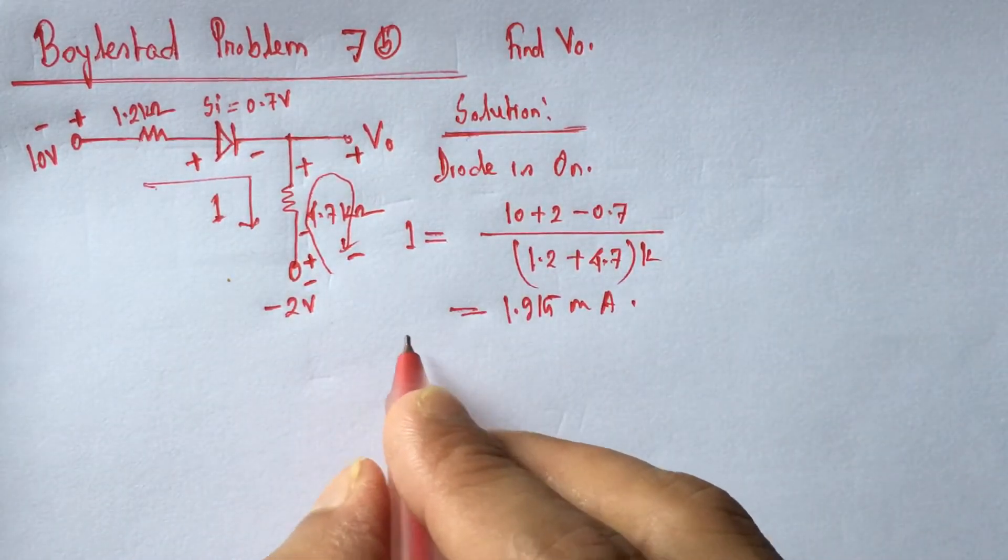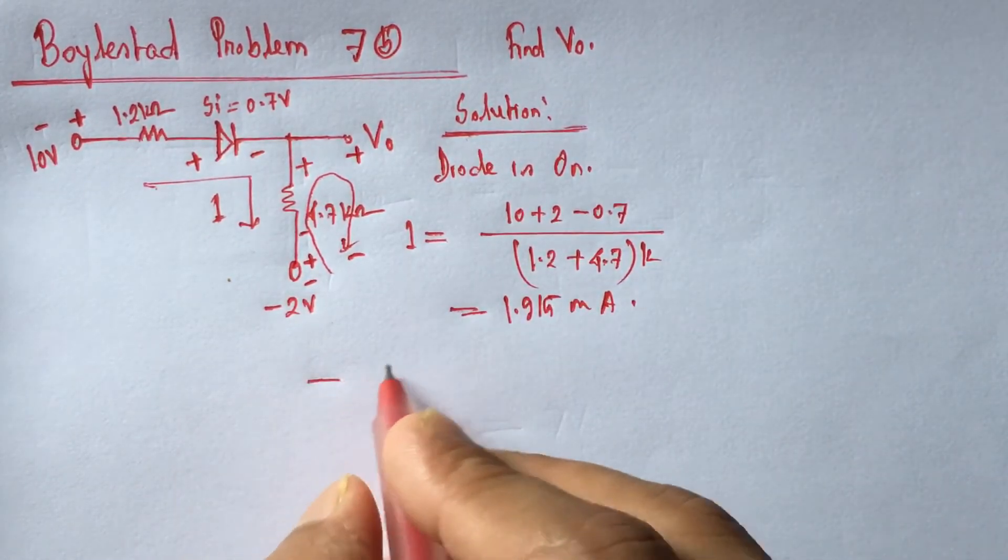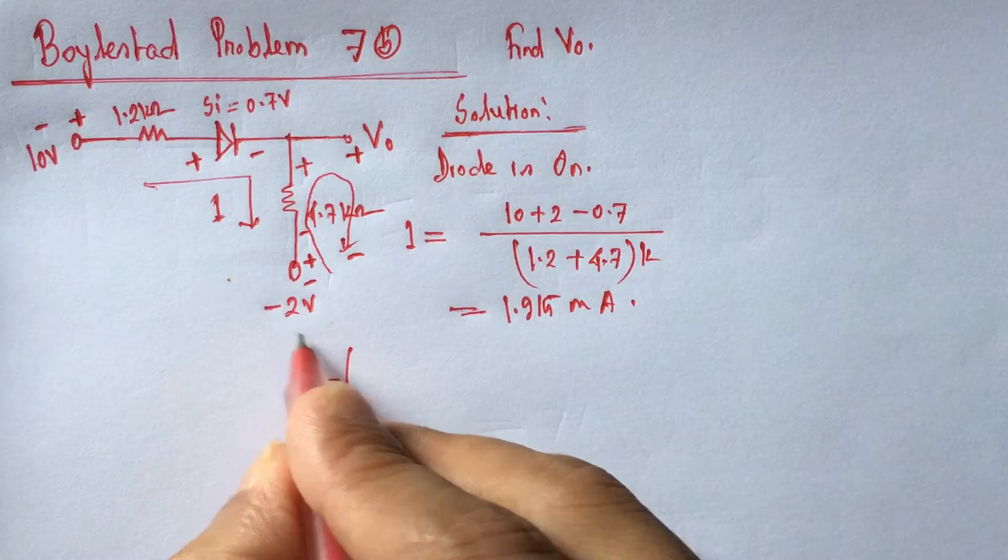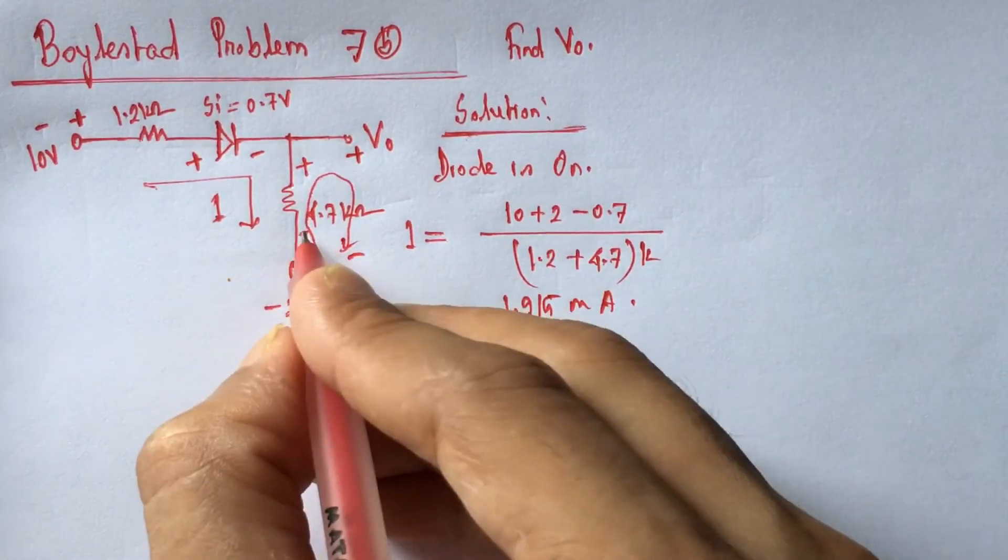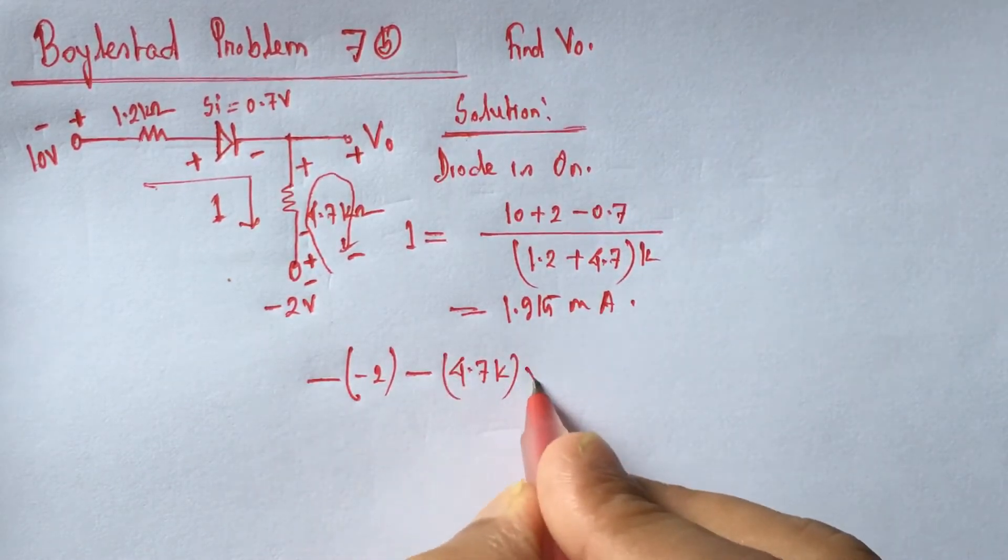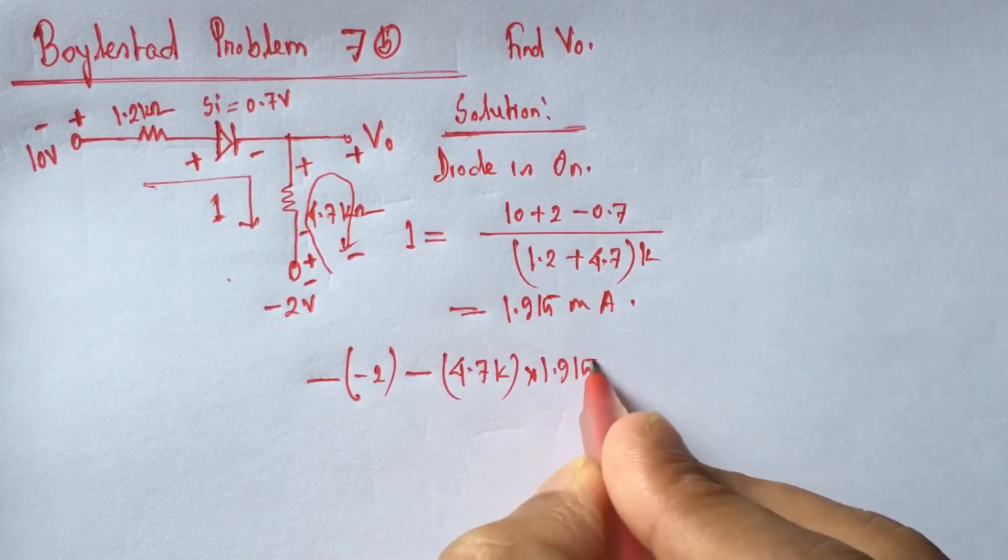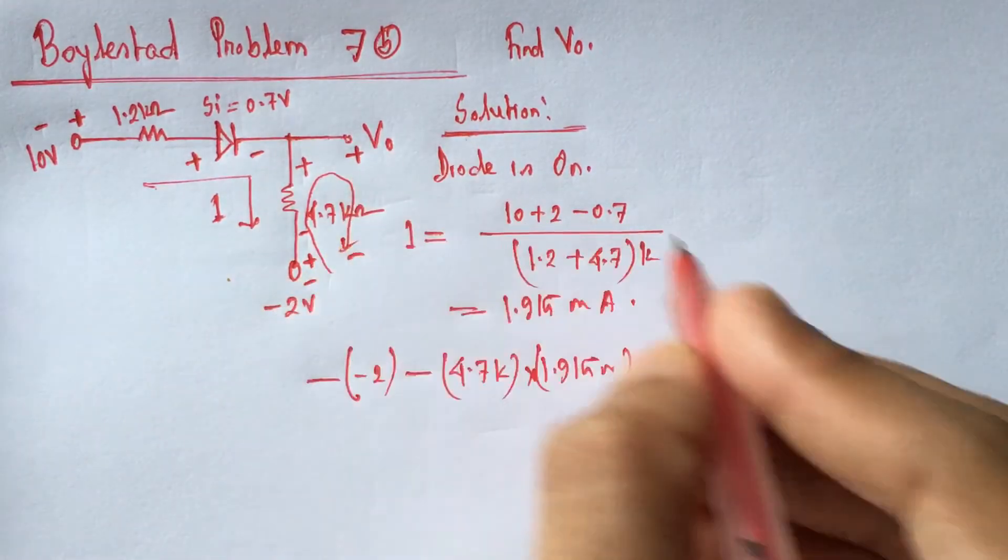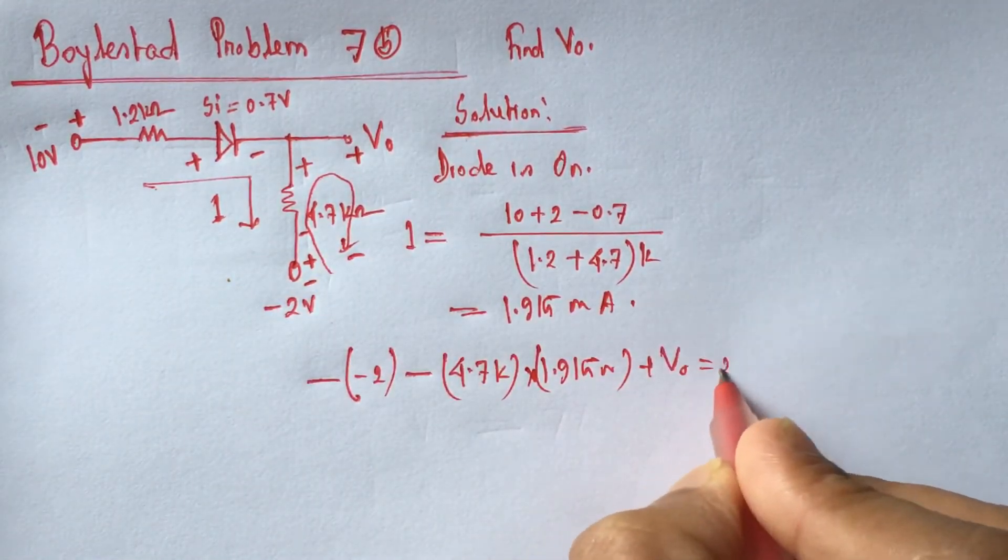And this is minus 2 volt minus 4.7k into 1.915 milliampere plus V0 is equal to 0.